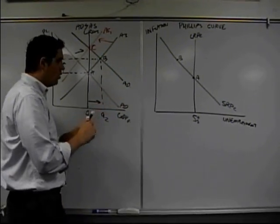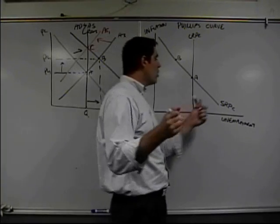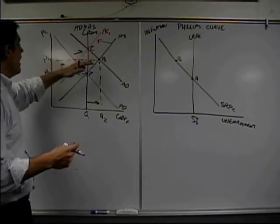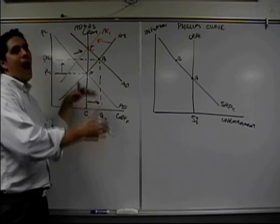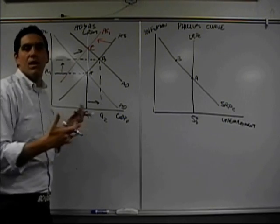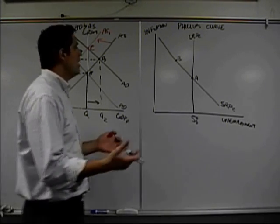Same concept is right here. How do I know? Well, the short-run Phillips curve, when aggregate supply shifts to the left, now we're going to have higher prices, higher inflation, and lower unemployment because firms are producing less. If that makes sense.